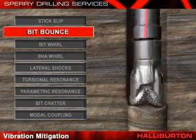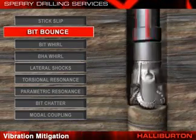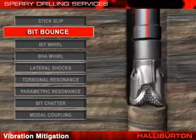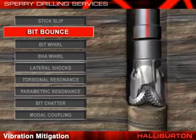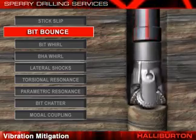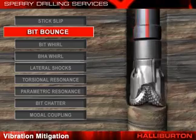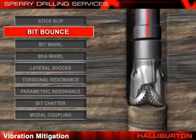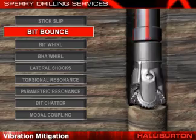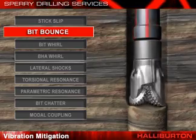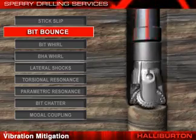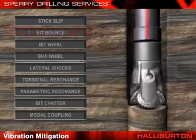The second mechanism is called bit bounce. It's the axial or longitudinal vibration of the drill string that typically happens with three cone bits in hard rock formations. Bit bounce damages the drill bit cutting structure, bearings, and seals, and results in flexing of the drill string, causing even more damage from axial and lateral shocks.